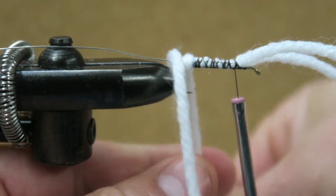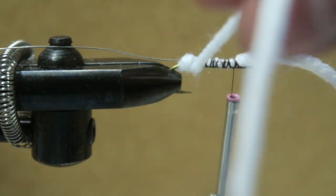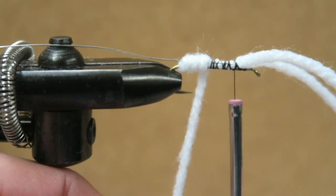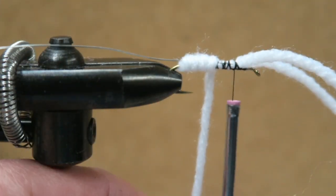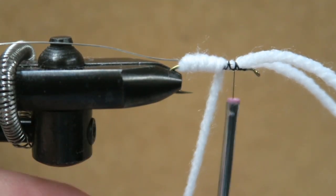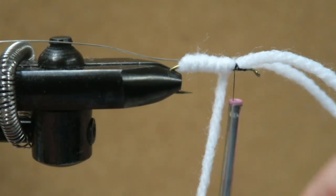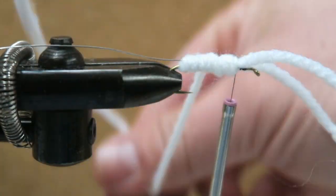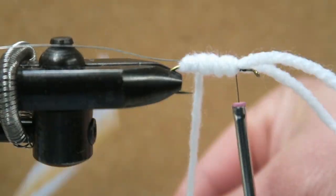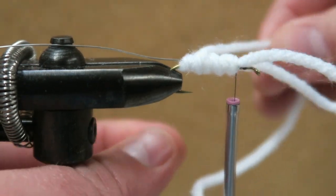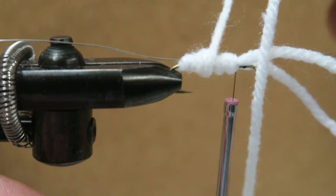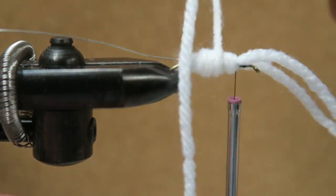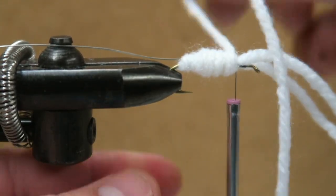Start to wrap it towards the front, right up to your tie-in point. Then start to go back about halfway, maybe slightly more. Then start working your way back up to the front again, so the front of it is a little fatter than the back.